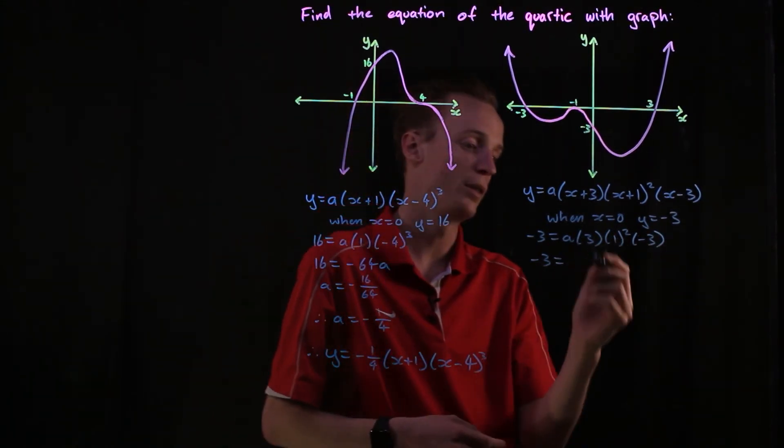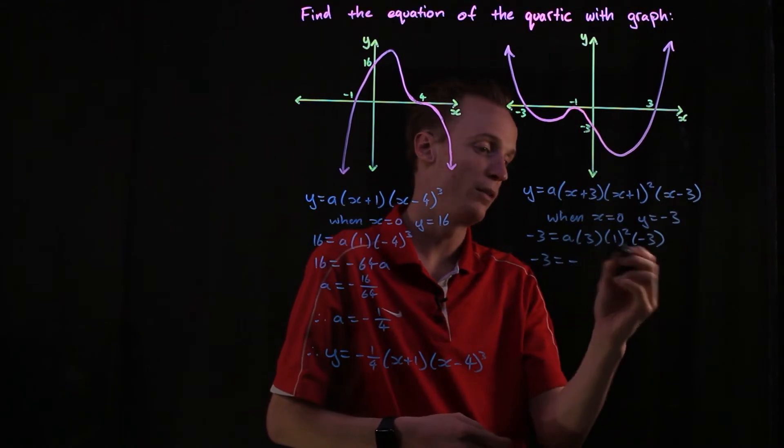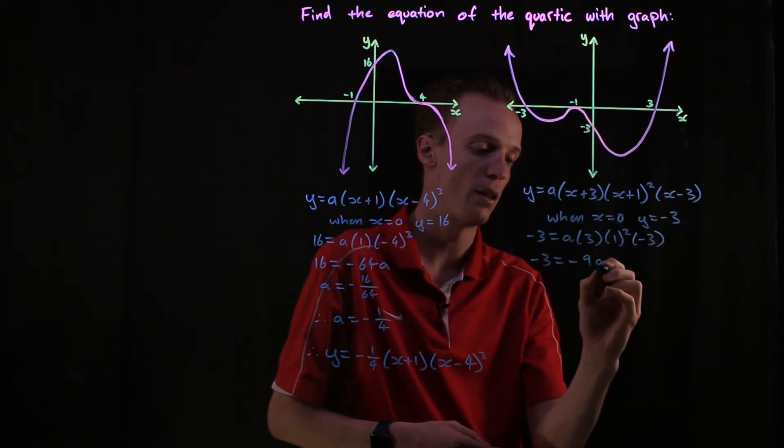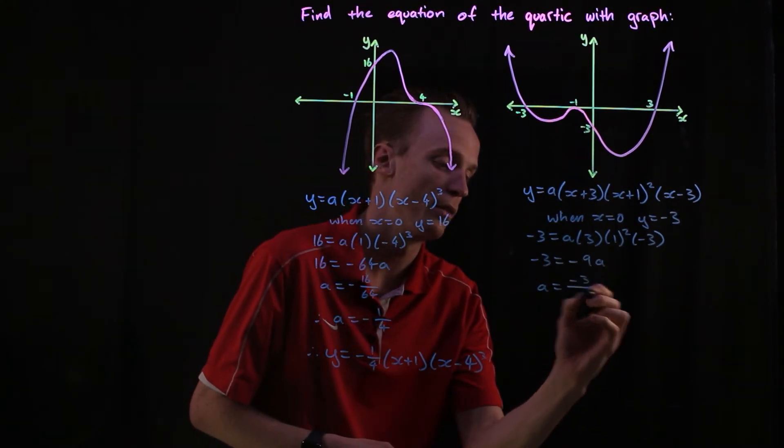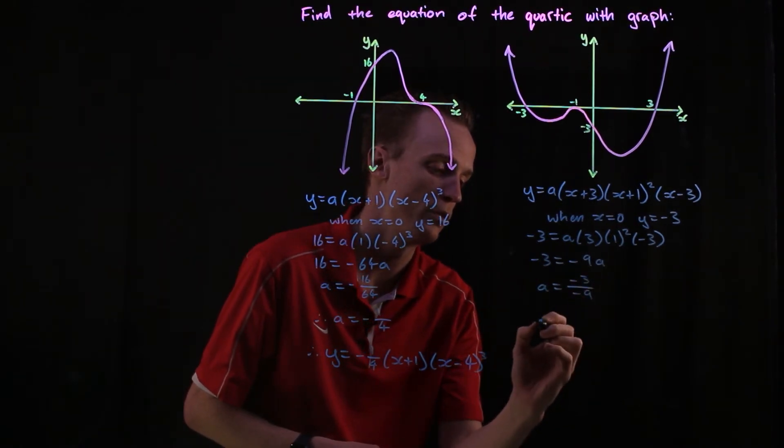When I expand this out now, three times one is three times negative three, which will be negative nine a.